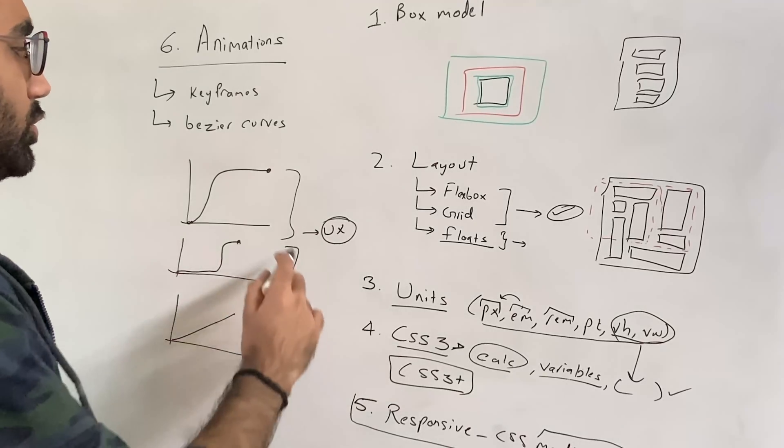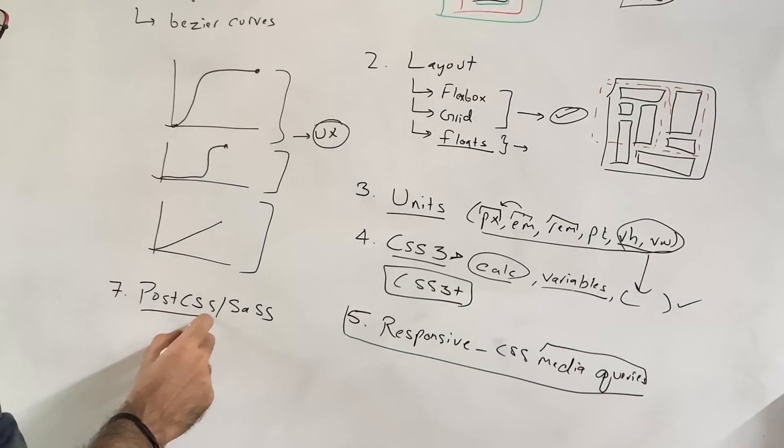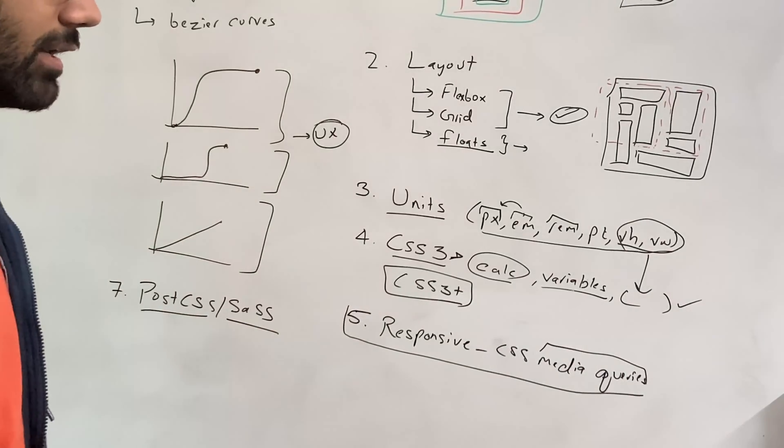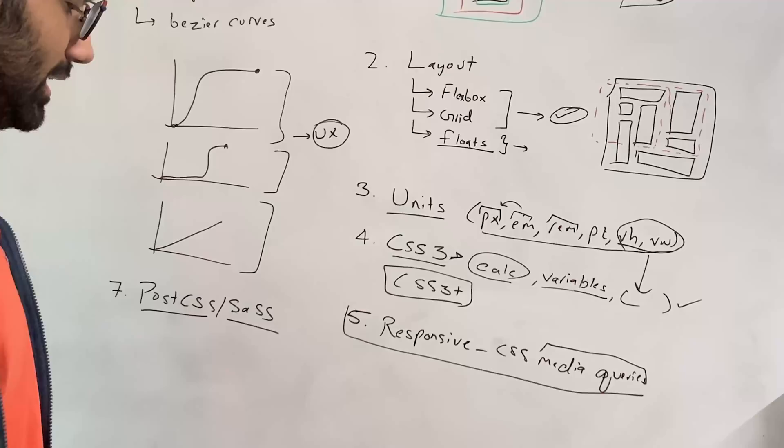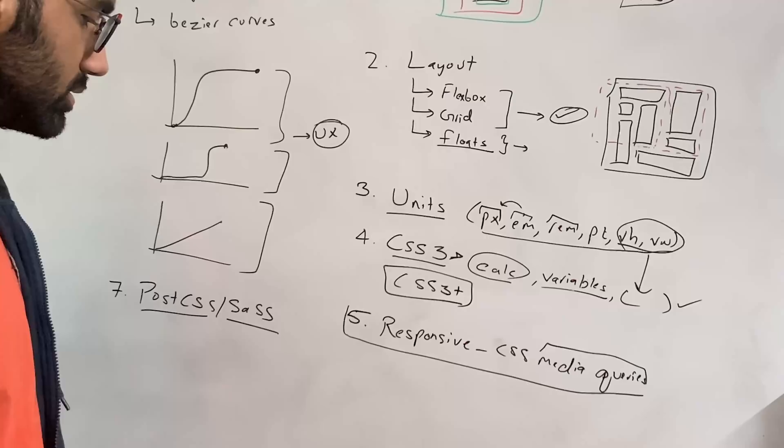So understanding about these curves, which curve might look better in what sort of animation, spring animations, this and that. So this is also a little bit on the UX side of things, but again if you are working with CSS you pretty much are working with the user experience so you have to know a little bit about that as well. Seventh thing which comes to my mind is using something like PostCSS, or not exactly using, at least knowing about PostCSS and Sass.